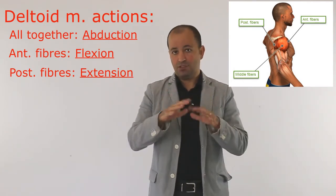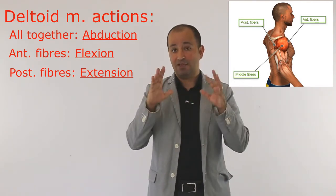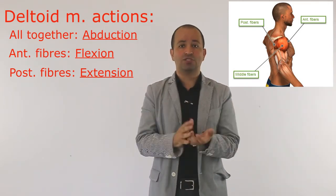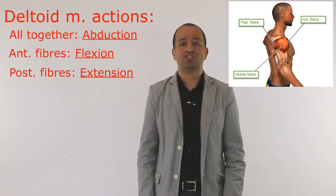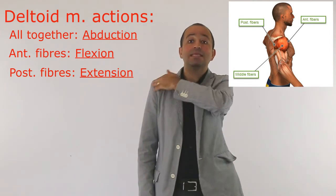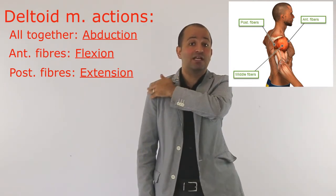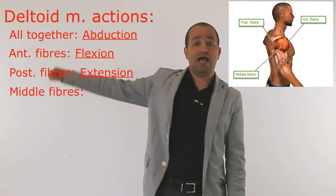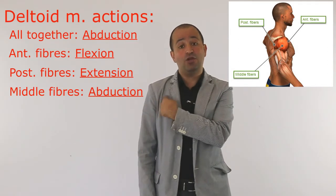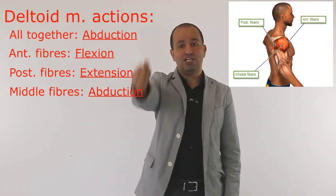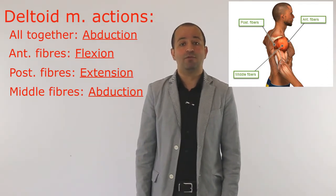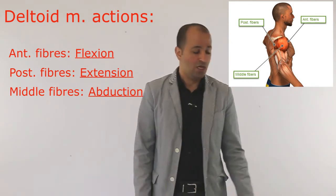To make it simple: if they ask about deltoid muscle altogether, the action is abduction. If they say the middle fibers of deltoid, again, abduction. If they say anterior fibers of deltoid, flexion. If they say posterior fibers of deltoid, extension.